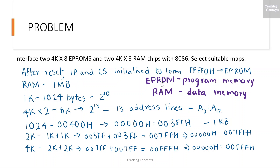Also remember that EPROM is program memory and RAM is data memory. 1K is 1024 bytes, which can be written as 2 raised to 10. In the question it is given as two 4Kx8 EPROMs and two 4Kx8 RAM chips. So 2×4K is 8K. 8K can be written as 2 raised to 13, which means that we will need 13 address lines for addressing this memory. So A0 to A12 can be selected for that.